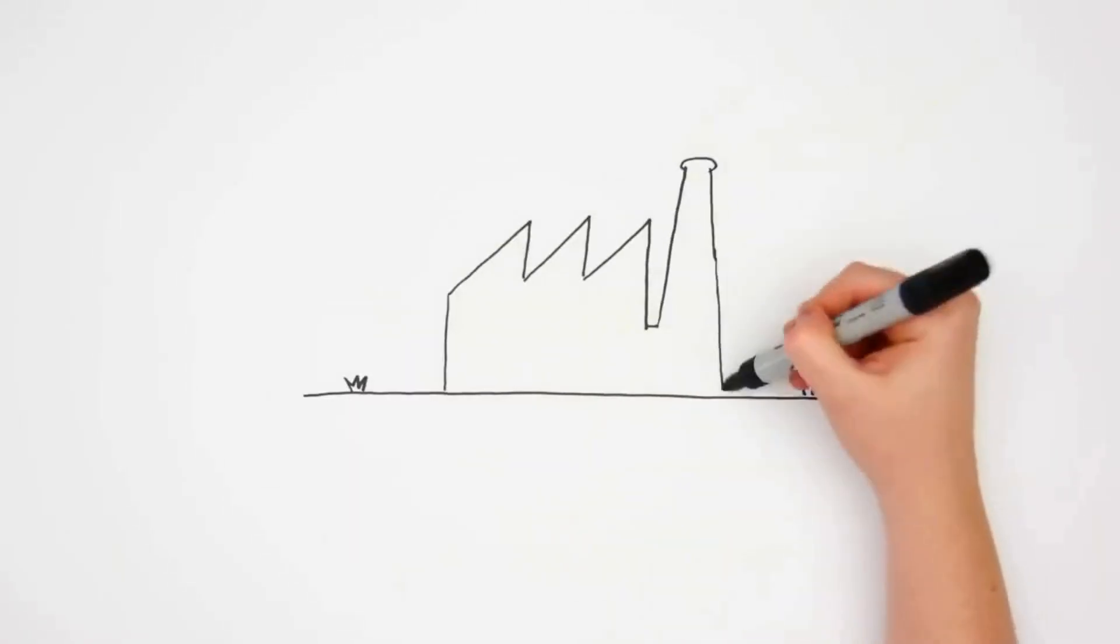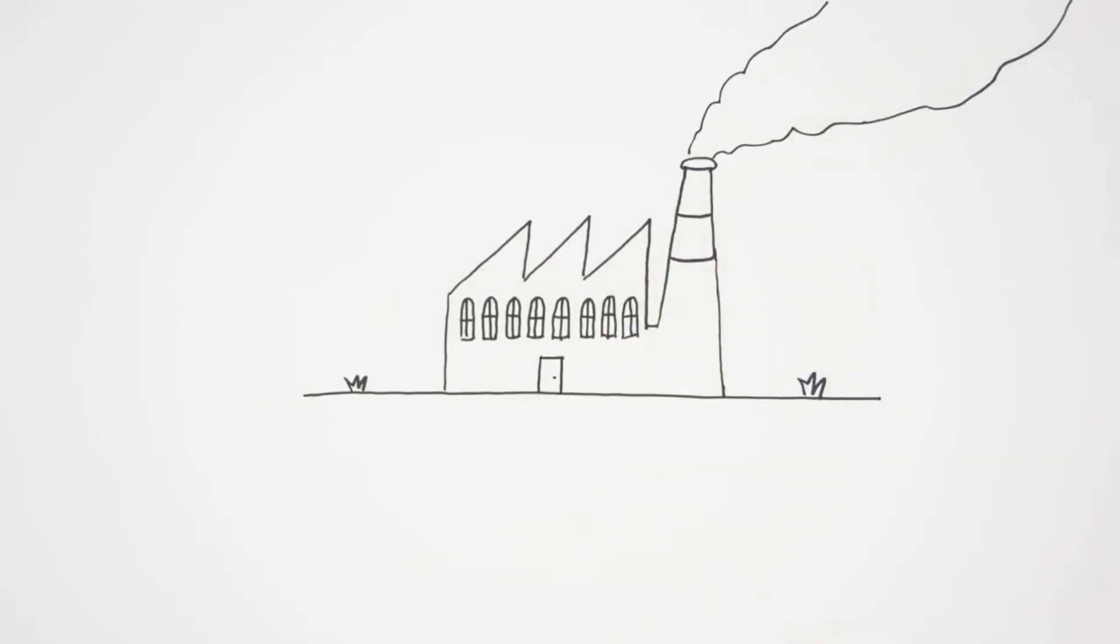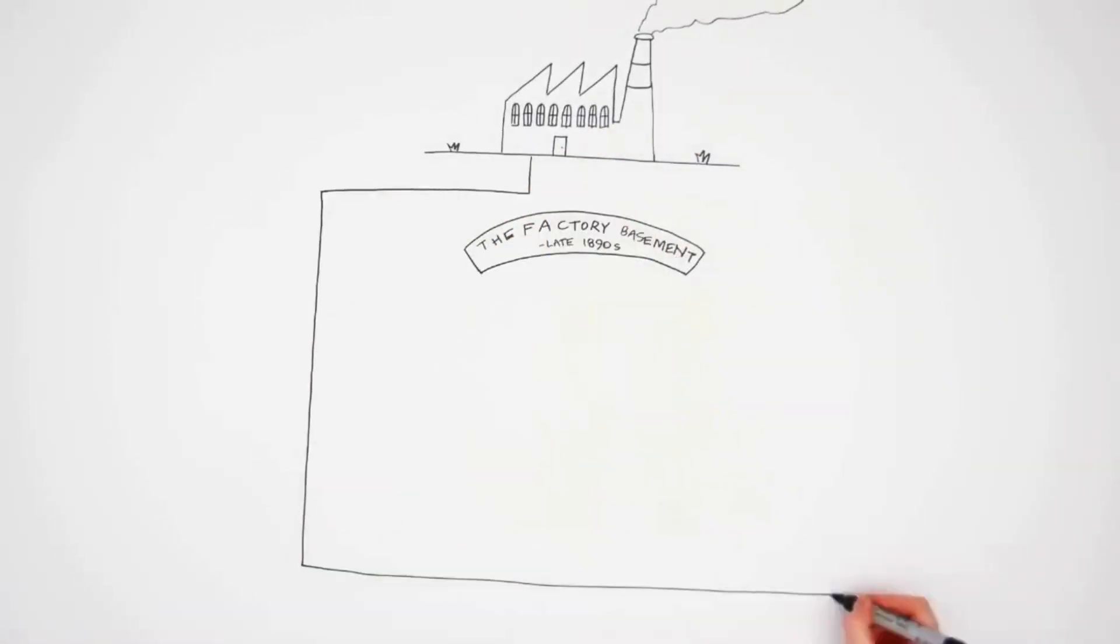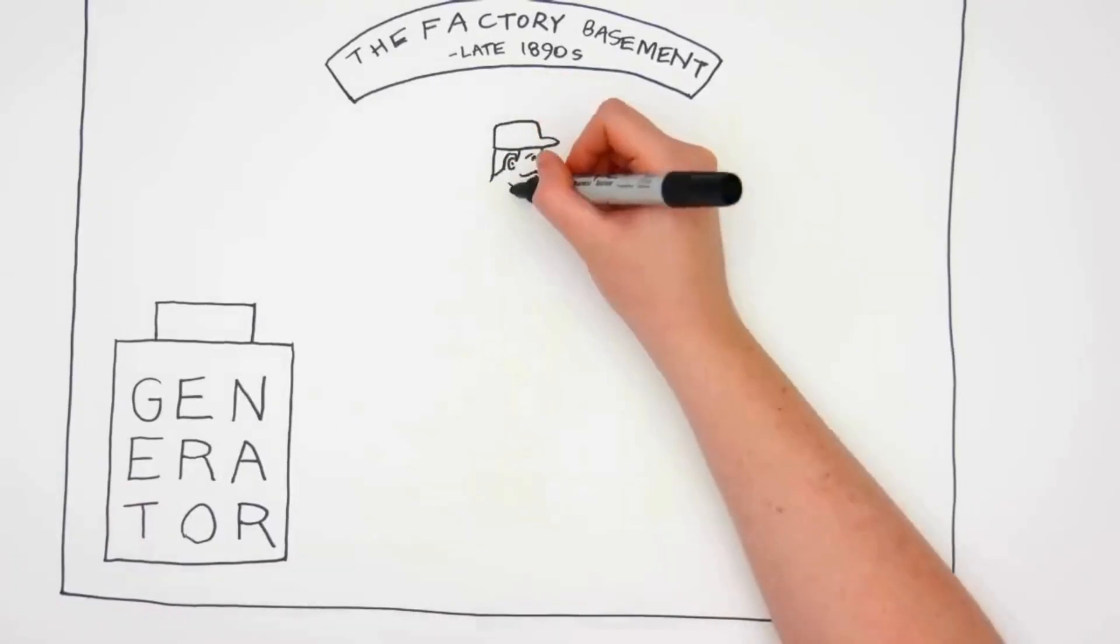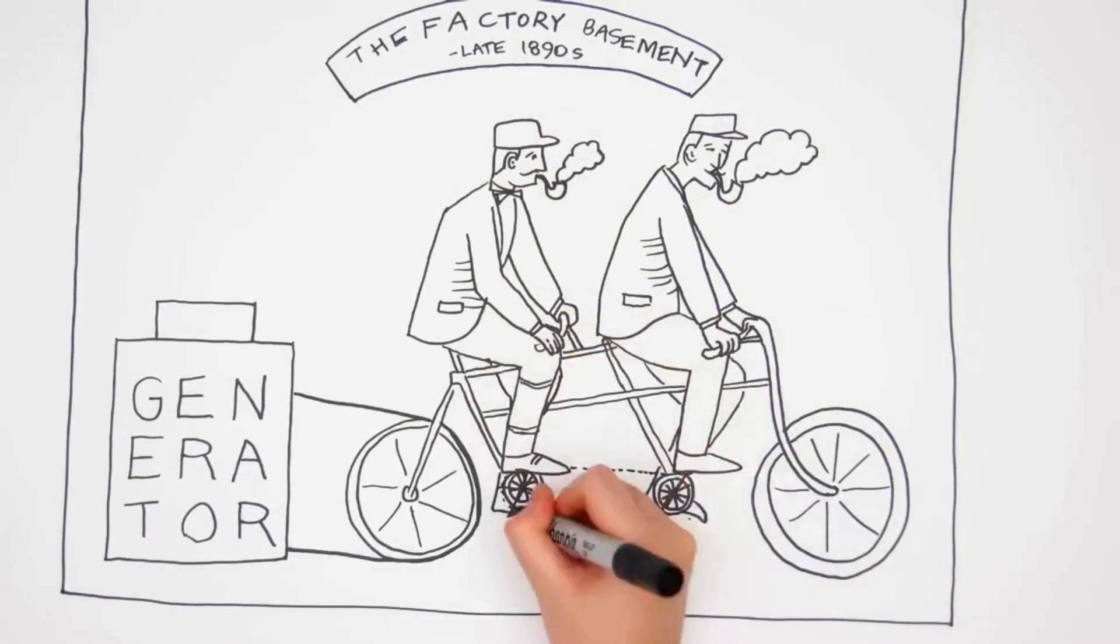History reveals a similar shift happened in the way business used power at the turn of the century. In the late 1890s, every factory or business had in its basement a smoke-belching, fuel-consuming power generator stoked by grey boiler suited men who serviced it and kept it running as best they could.